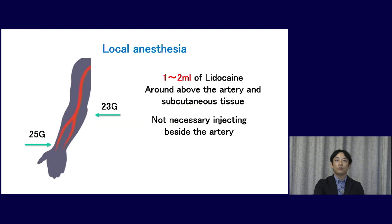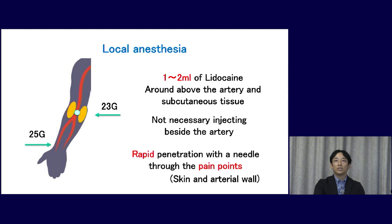For local anesthesia, we usually administer a small amount — about 1 to 2 ml of lidocaine — around and above the brachial artery and subcutaneous tissue. We believe it is not necessarily needed to inject beside the artery. It's important to have rapid penetration with a needle through the skin and arterial wall to decrease the patient's pain and discomfort.